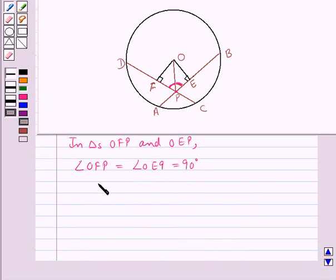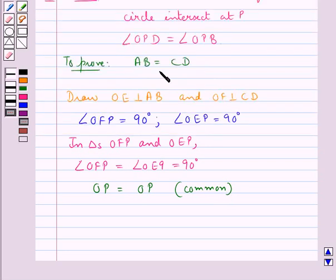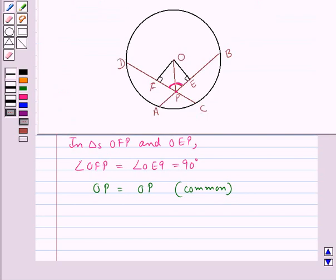Then the side OP is equal to OP, that is the common side to both triangles. And we were given that angle OPD is equal to angle OPB. That is, angle OPF is equal to angle OPE.